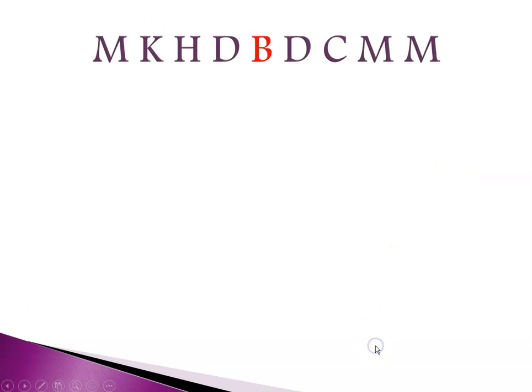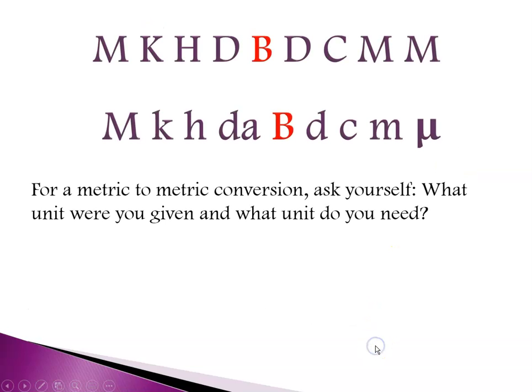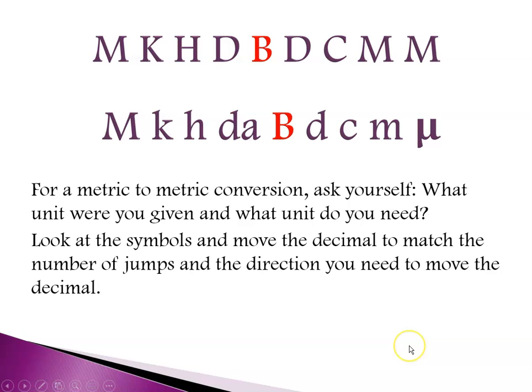For a metric to metric conversion, first ask yourself what unit you're given and figure out where it is. Then what unit do you need? Look at the symbols and move your decimal to match the number of jumps and the direction you need to move.